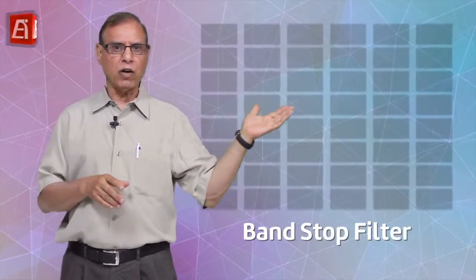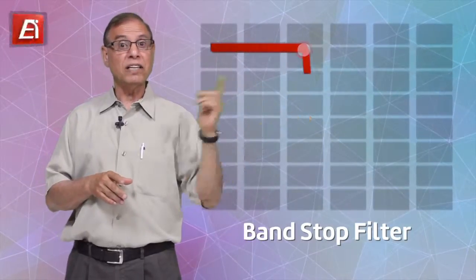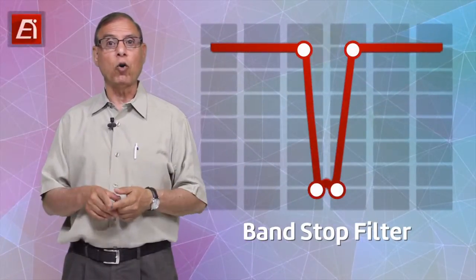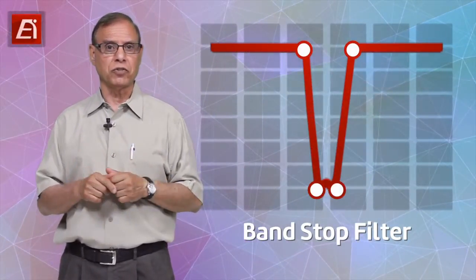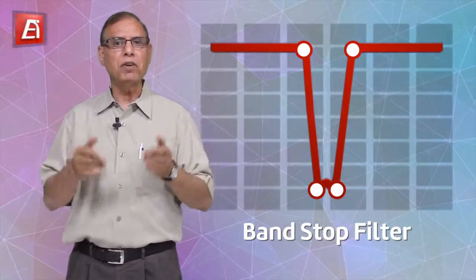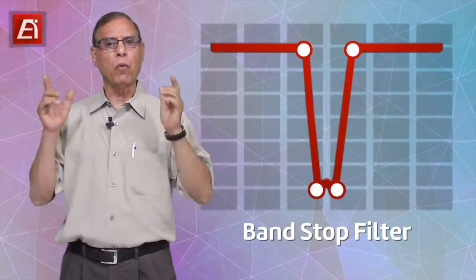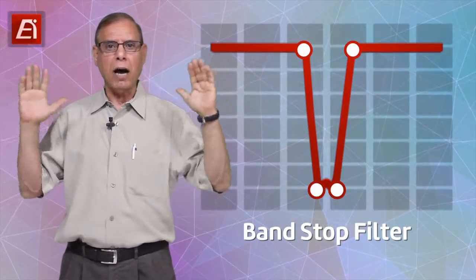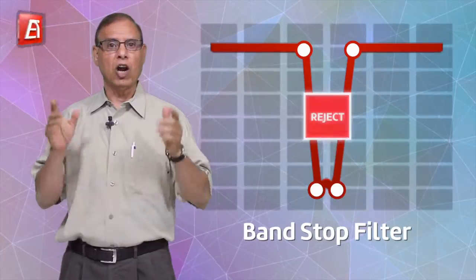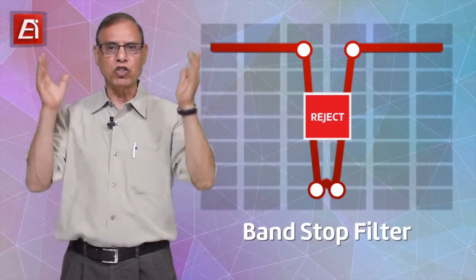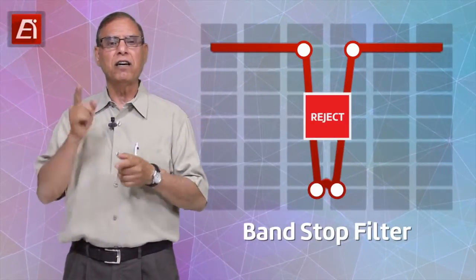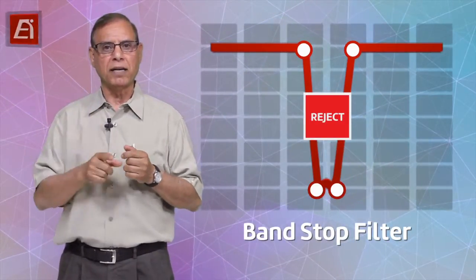Looking at the diagram, you can see why they are often called notch filters — they create a deep notch within a wide operating frequency band, meaning a large amount of rejection at that specific frequency band.